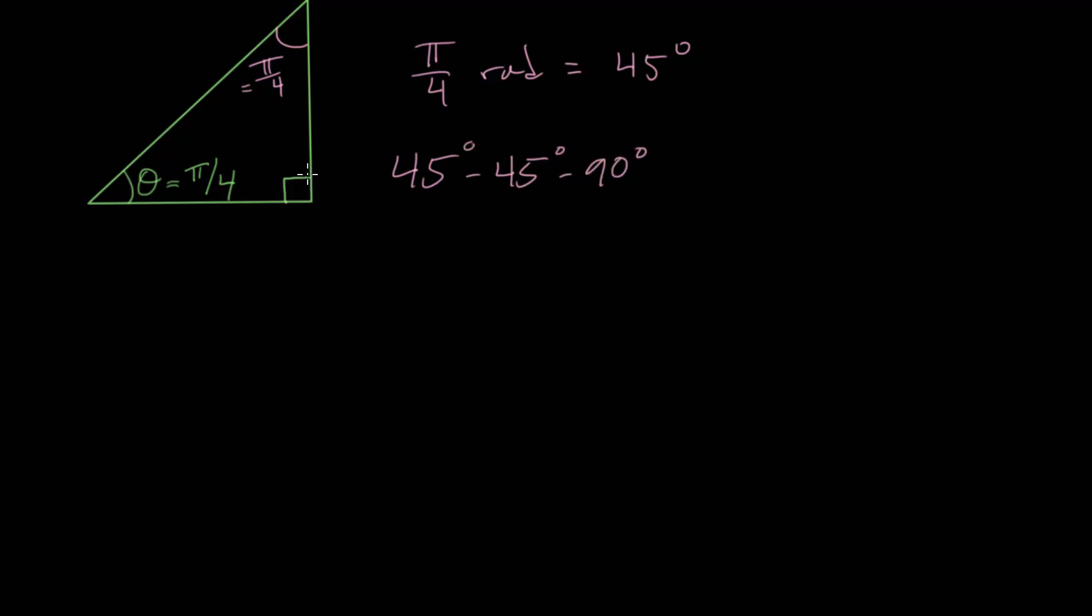If we say that the hypotenuse of this is r, then these two sides are equal, since this is an isosceles triangle. We can solve for these sides, which will be r divided by the square root of 2, or if we rationalize this denominator, root 2 over 2 multiplied by r. It would be the same for this side, since these are equal in a 45-45-90 triangle.